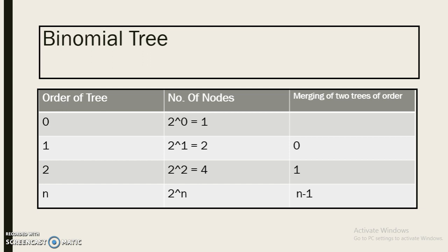A tree of degree 1 is just two nodes, that is two trees of degree 0. A tree of degree 2 is four nodes, that is two trees of degree 1.